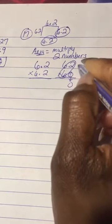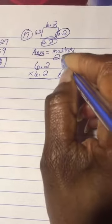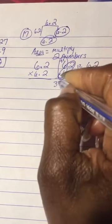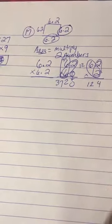Which is 12. Put my 2, carry the 1. So 6 times 6 is 36 plus 1, which is 37. 2 times 2 is 4, 6 times 2 is 12.